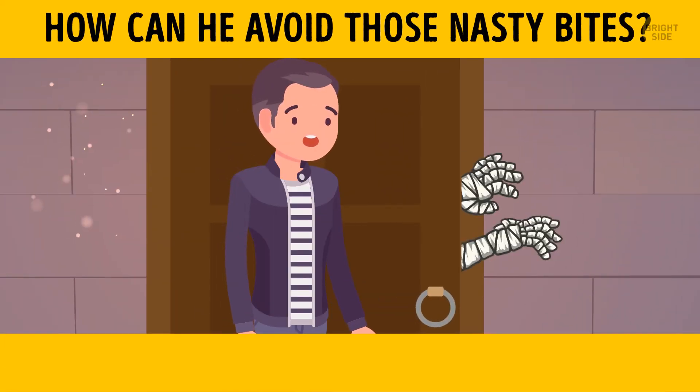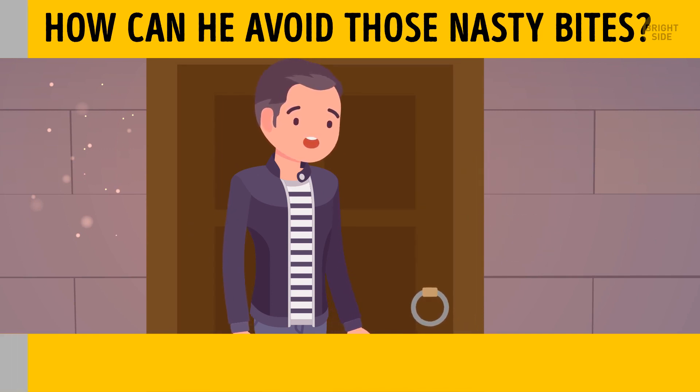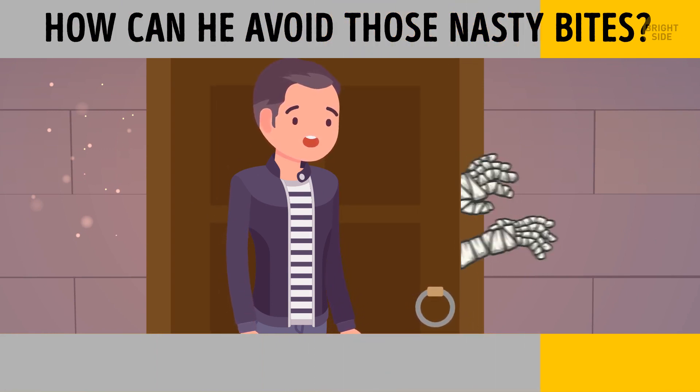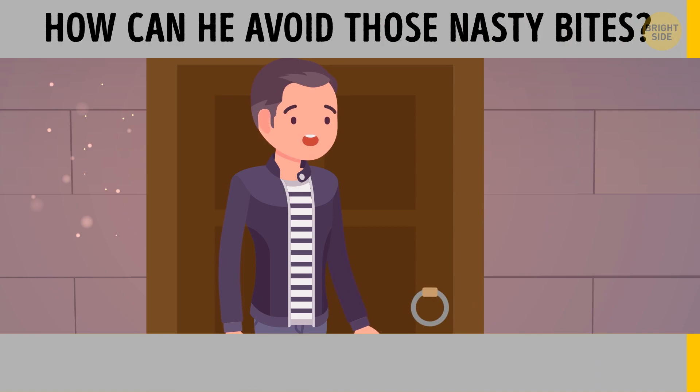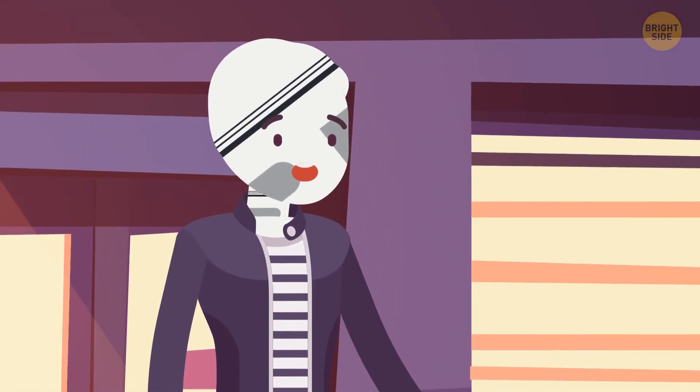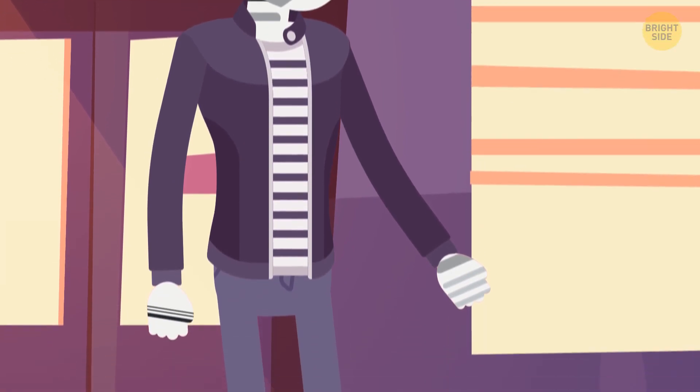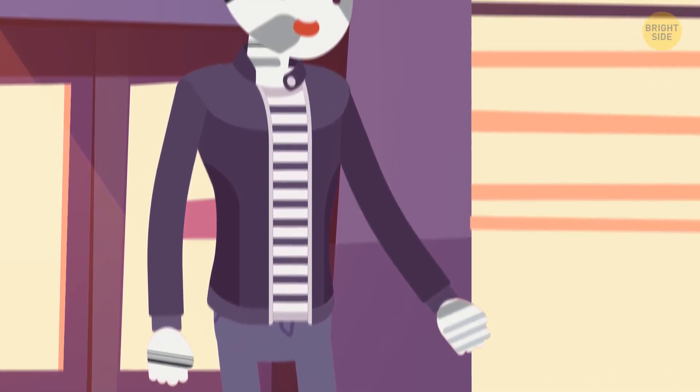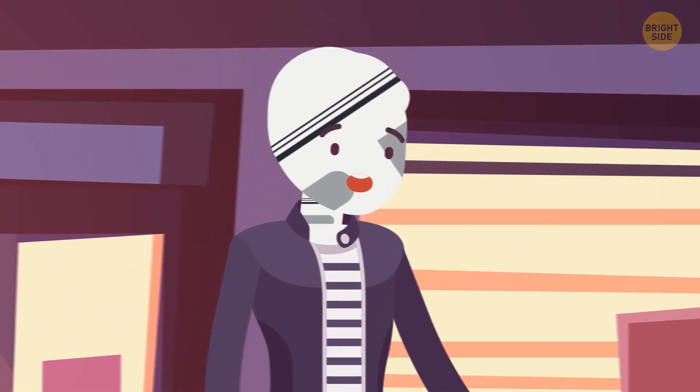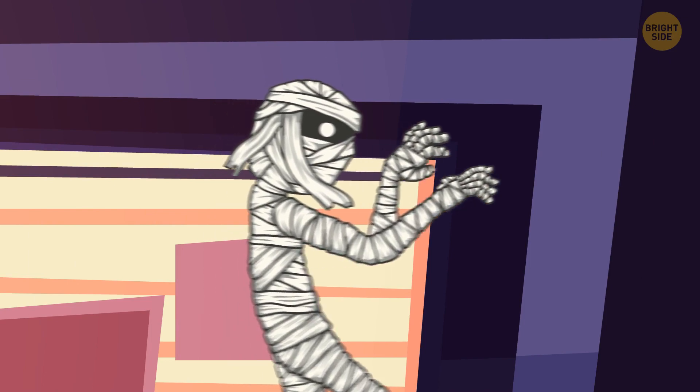The only way for Diego to escape will be to tape those magazines around crucial parts of his body where they can't lay his teeth on him. It'll be light enough for him to run away from the zombies without getting hurt. Plus, he'll have plenty of reading material for the road.